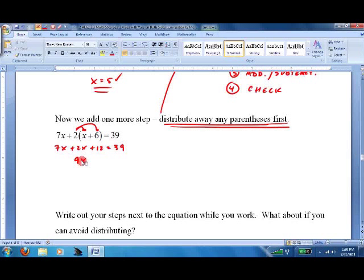Combine like terms. 9x plus 12 equals 39. Subtract 12. 9x equals, I believe that's 27. Divide by 9. x equals 3.